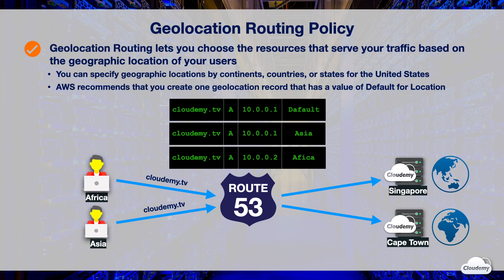Here are some use cases of geolocation routing. You can localize your content and present the website in the language of your users. You can also use geolocation routing to restrict the distribution of content only to the locations in which you have distribution rights. Another possible use case is load balancing across endpoints in a predictable way, so that requests from each location are consistently routed to the same endpoint.